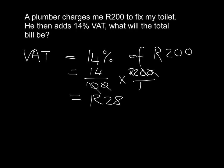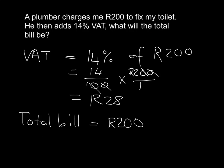But that's not what the question asked - the question asked what will the total bill be. The plumber has to make the total bill: the 200 rand, which is the amount he's actually going to keep, and then the 28 rand VAT which he's got to send off to the government. So I will have to pay him 228 rand.